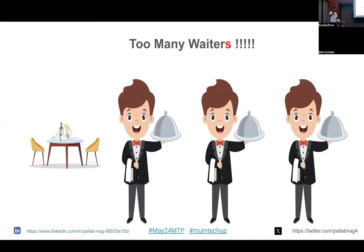Let's go back to the restaurant example. Now I'm a rich guy — I've scaled my restaurant to the next level and employed N number of waiters. But consider these waiters don't gel up with each other; they're segregated. So one table has multiple waiters coming to take the order — the customer has already placed the order, and then the second guy comes, then the third. The customer is irritated and this is hampering customer satisfaction. The only way to improve is to increase communication between these waiters.